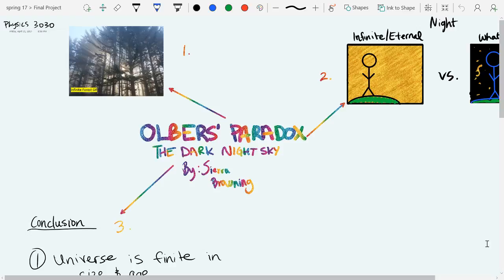Hello, my name is Sierra Browning. My final project topic is Olbers' Paradox.